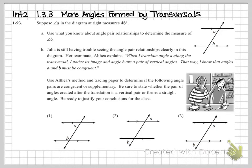Looking at problem 1-93, this is a combination of book problems and notes. Suppose angle A in this picture is 48 degrees — I'll go ahead and mark that. What we want to do is use what we know about angle pair relationships to determine the measure of angle B.